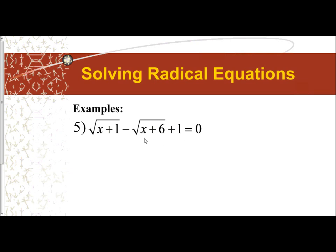What you do is, if you have more than one radical with variables inside of them, you move them to separate sides. So that's what I'm going to do first. I am going to move the negative one so it can become positive — I am going to move the square root of x plus six to the other side by adding it to both sides. That's going to cancel it out here, and so I'm left with my original radical, square root of x plus one.